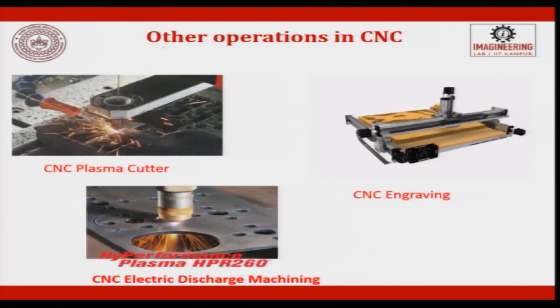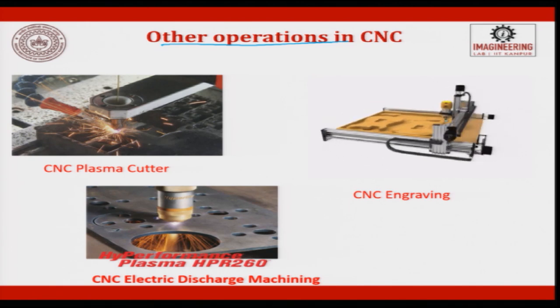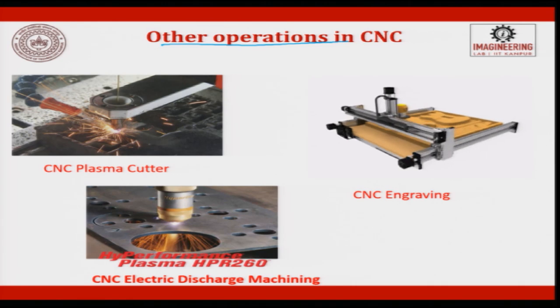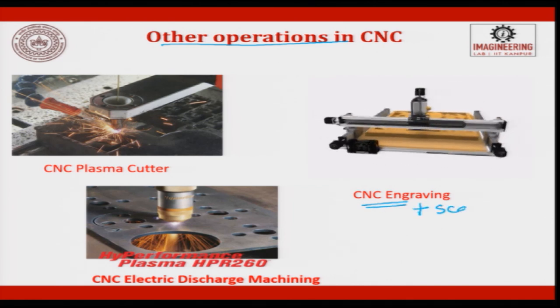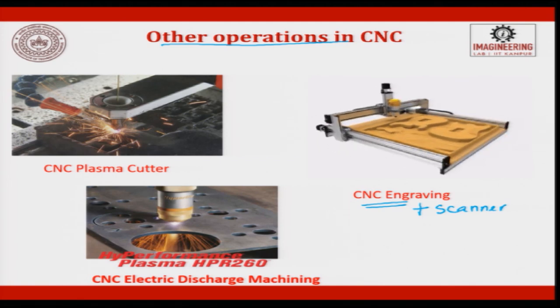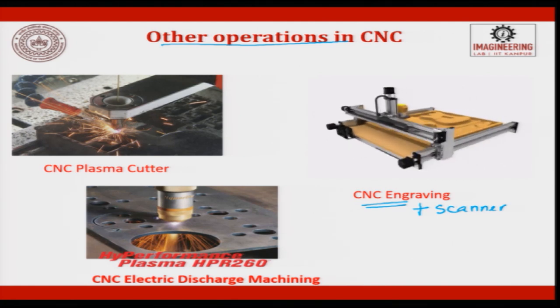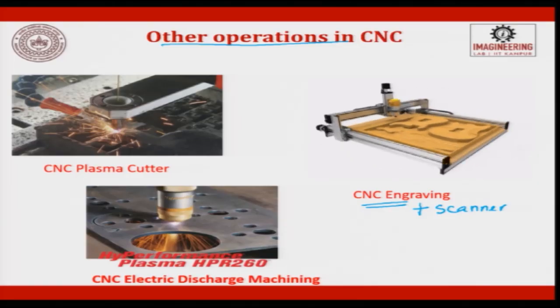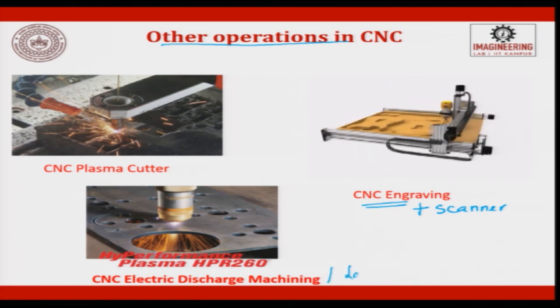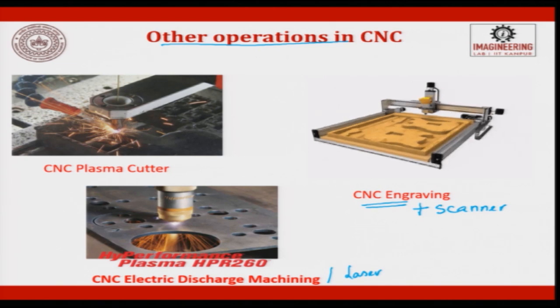Other operations to which CNC is getting attached include plasma cutting, engraving, and integrated engraver-plus-scanner machines that scan data from an object, convert it into X-Y signals, and engrave it onto a board to replicate the object. CNC is also extensively used for electric discharge machining (EDM) and laser-assisted machining.